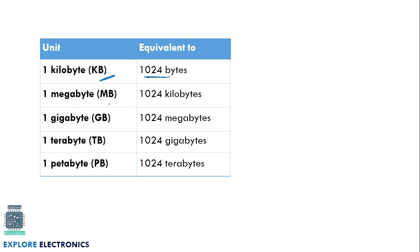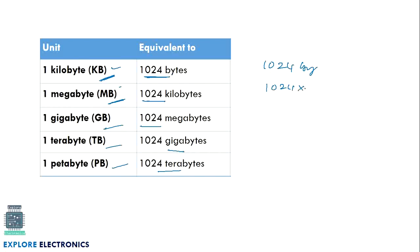Memory sizes: 1 kilobyte = 1024 bytes; 1 megabyte = 1024 kilobytes; 1 gigabyte = 1024 megabytes; terabyte = 1024 gigabytes; petabyte = 1024 terabytes. These are represented as KB, MB, GB, etc. Since 1 byte = 8 bits, 1 KB equals 1024 × 8 bits.